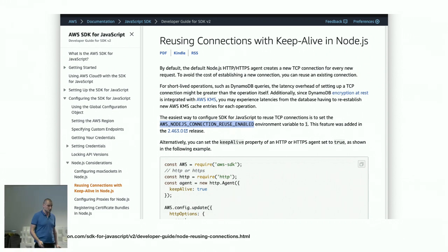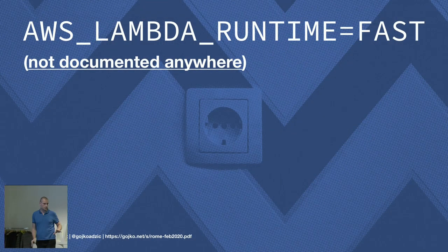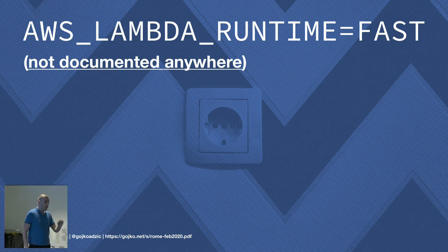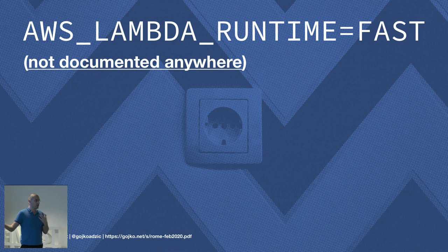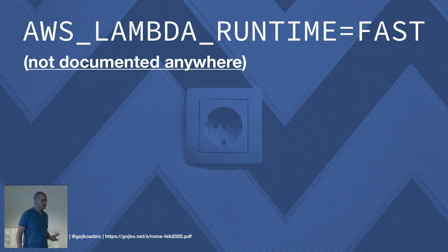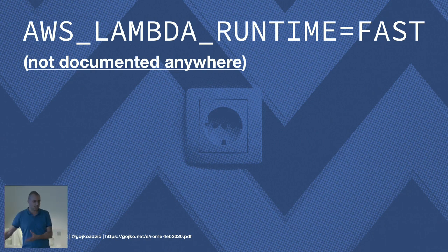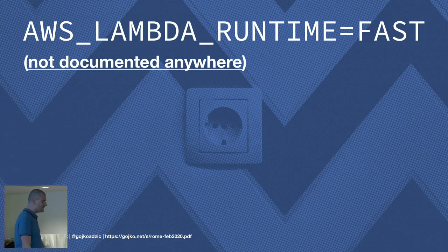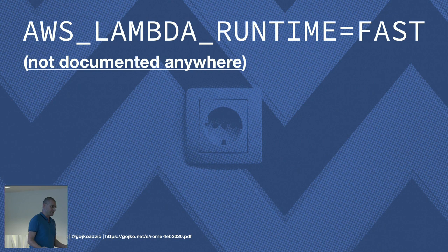There's another really interesting flag — you won't find it in any blog post. With some digging, you can stumble upon this undocumented flag that gives you a different Lambda runtime that works much faster. But undocumented flags are always problematic — cloud providers might change them or ignore them. And I literally invented this flag two minutes ago to prove a point. You shouldn't believe people on stage. Please, please, please test everything.